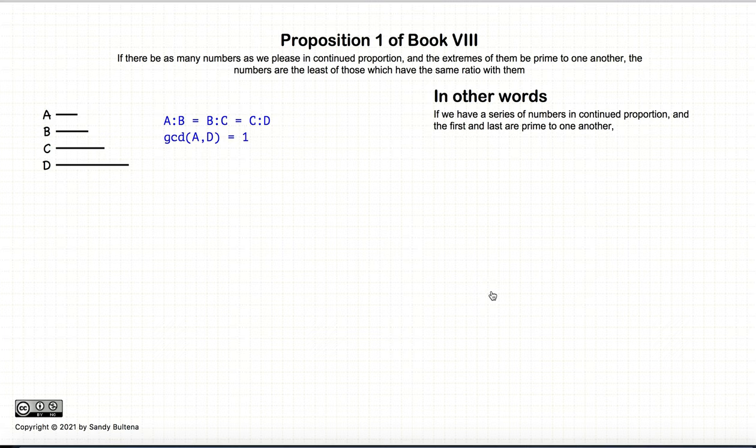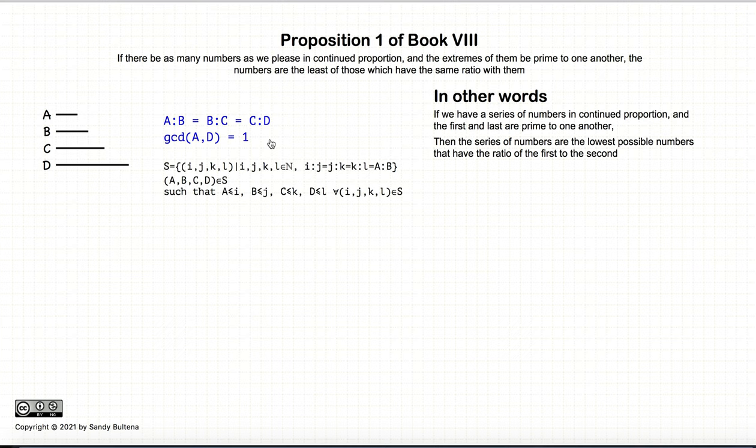In addition to being in continuous proportion, the number A and the number D are relatively primed to each other. So these are the initial conditions, and the proposition states that there are no numbers that are smaller than A, B, C, and D. So there is no number that's less than A, another number that's less than B, and so on, such that they form a continuous proportion and the first two numbers are in the same proportion as A and B.